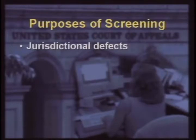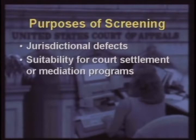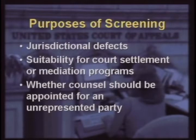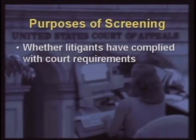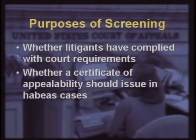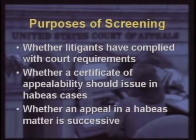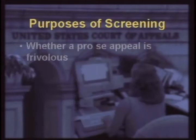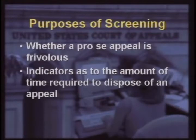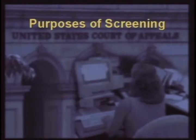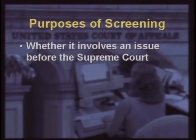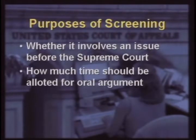Screening can be done for jurisdictional defects, for suitability for court settlement or mediation programs, whether counsel should be appointed for an unrepresented party, whether litigants have complied with court requirements or processes, whether a certificate of appealability should issue in habeas cases, whether an appeal in a habeas matter is successive, whether a pro se appeal is frivolous, indicators as to the amount of time required to dispose of an appeal, whether it involves an issue already being considered by a panel, whether it involves an issue before the Supreme Court, and how much time should be allotted for oral argument.